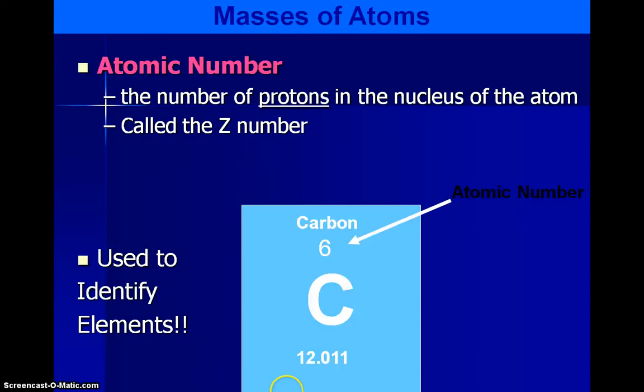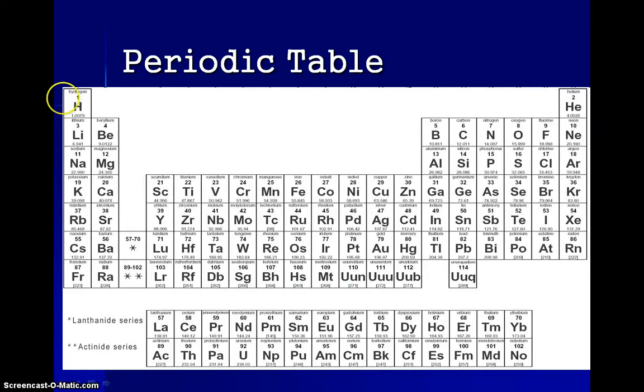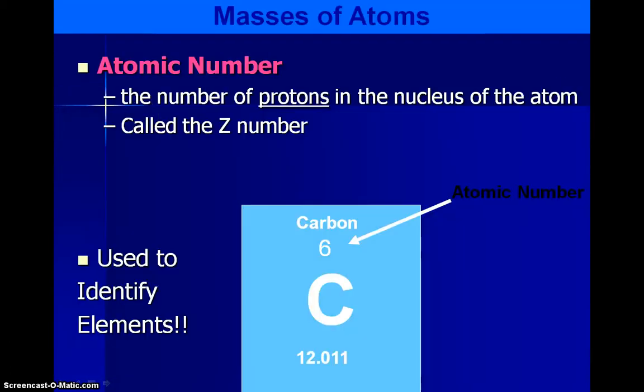So the whole number, each element, so if we look here, the periodic table is in order, and there's a whole number up top. It's usually on top. And that's the atomic number. So the atomic number actually tells you the number of protons that an atom of that element has. So the number of protons actually defines what element you are.